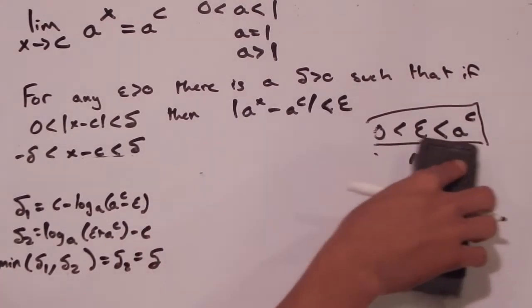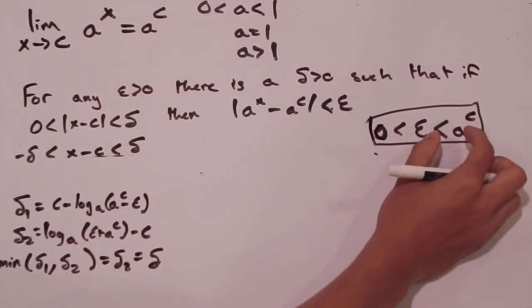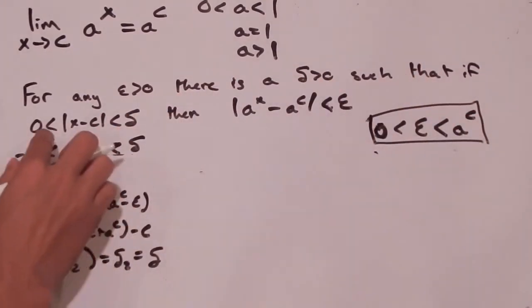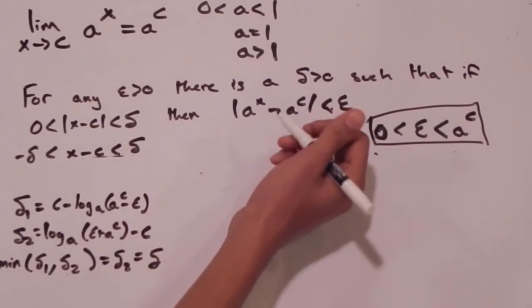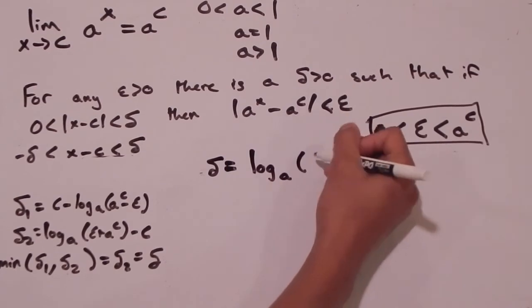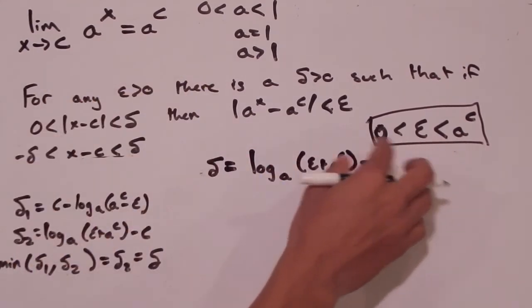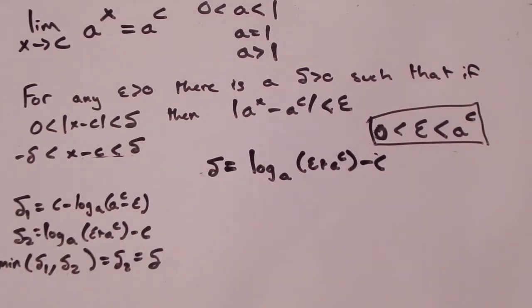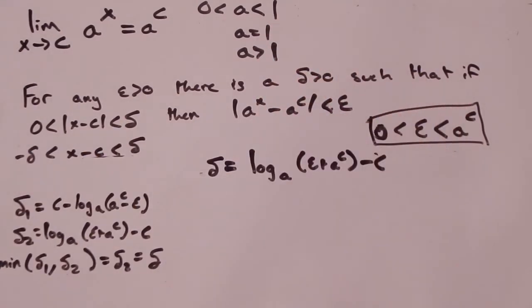Using delta_2 as our overall delta value, we know that for any epsilon satisfying 0 < epsilon < a to the c, there is a delta value such that if 0 < |x - c| < delta, then |a to the x minus a to the c| < epsilon. That delta value equals log base a of (epsilon plus a to the c) minus c. So if you give me any epsilon in that range, I just plug it in and find the corresponding delta.